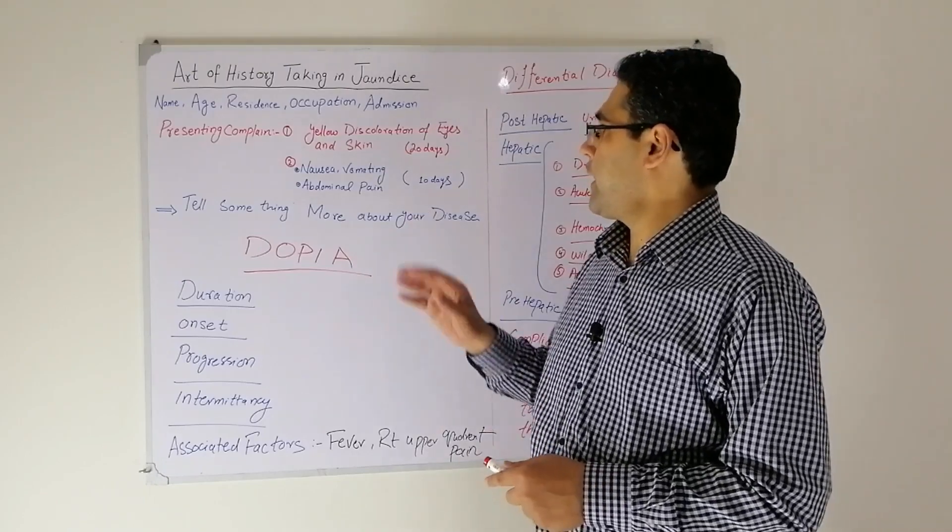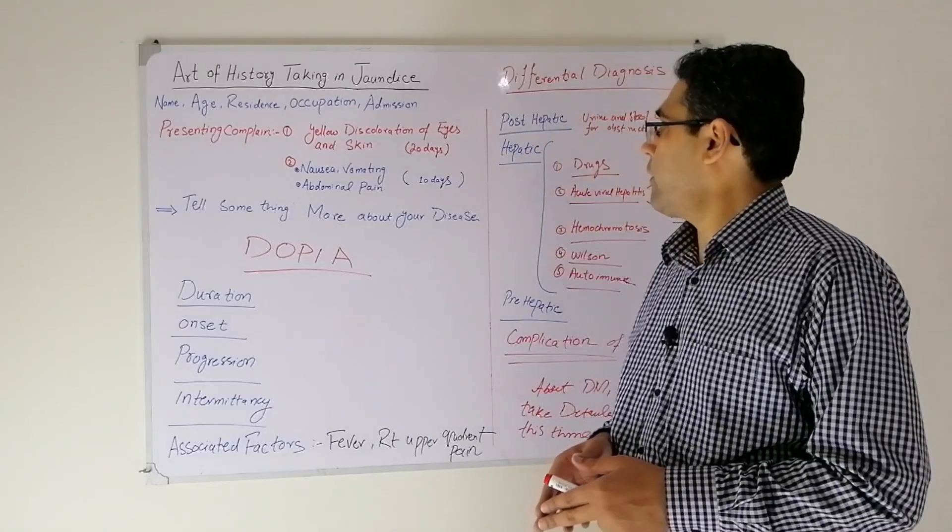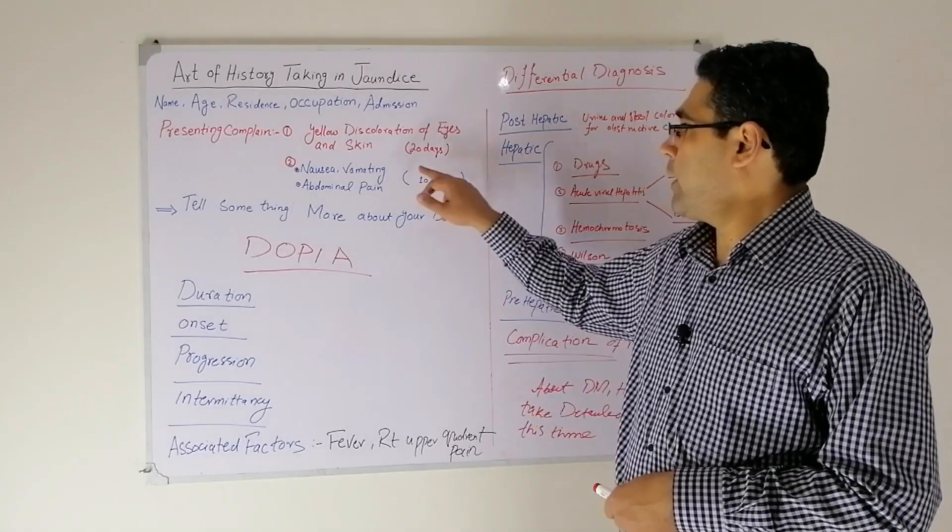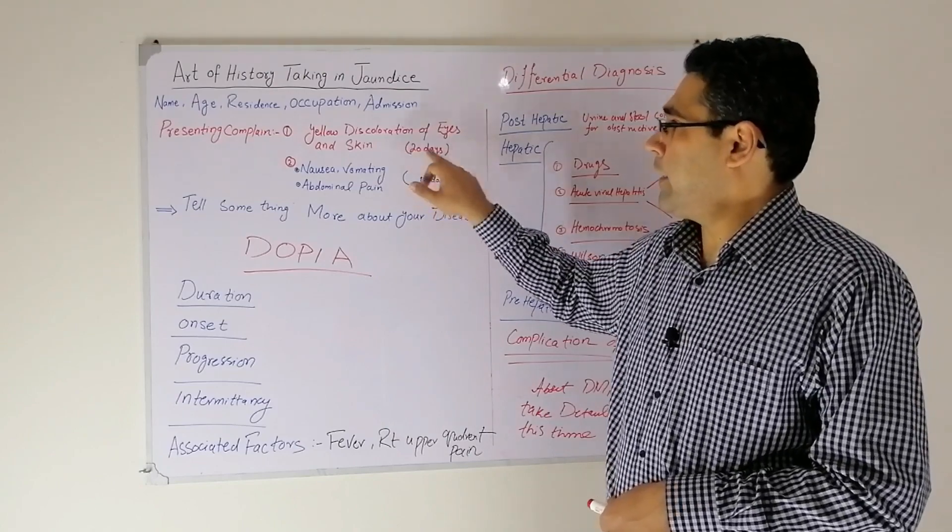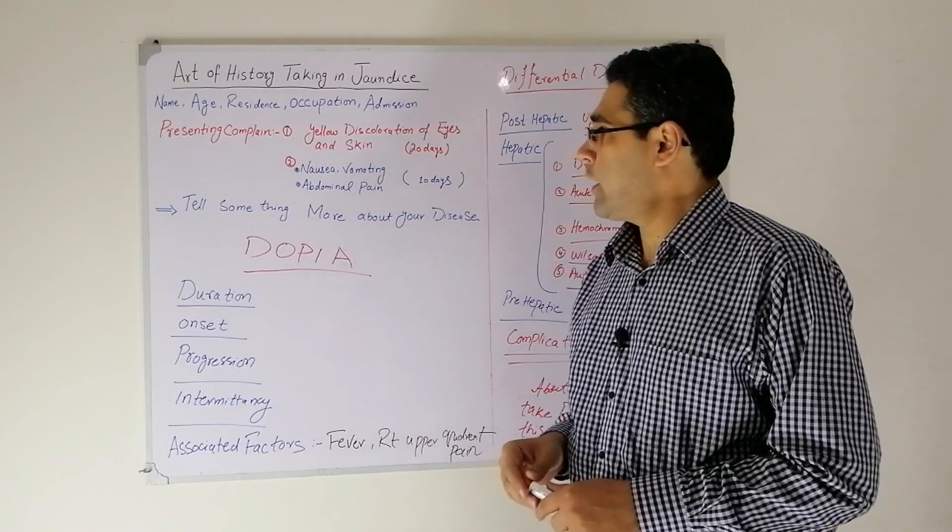Then comes the presenting complaint. The patient will say that I have yellow discoloration of eyes and skin. You will ask the duration and then ask the patient anything else with yellow discoloration.